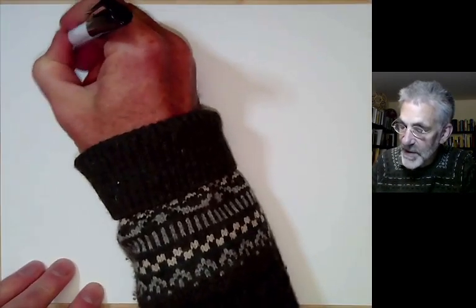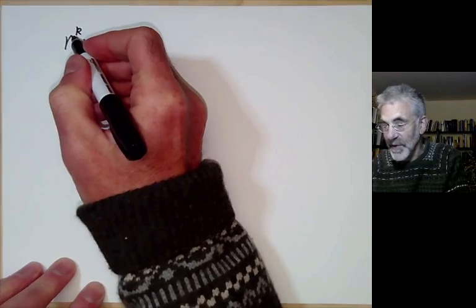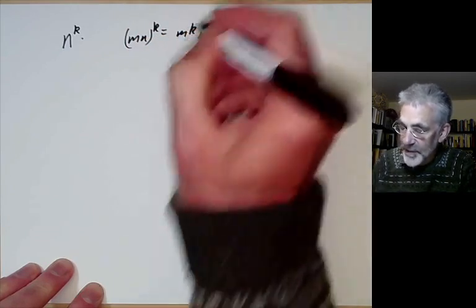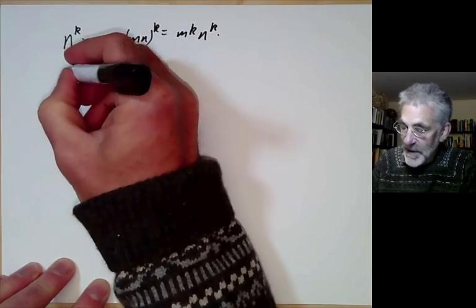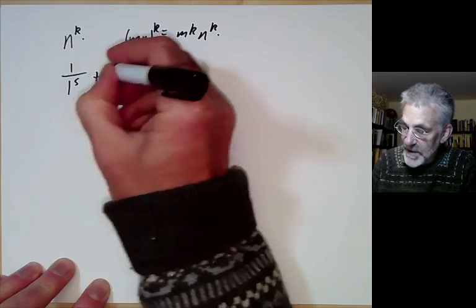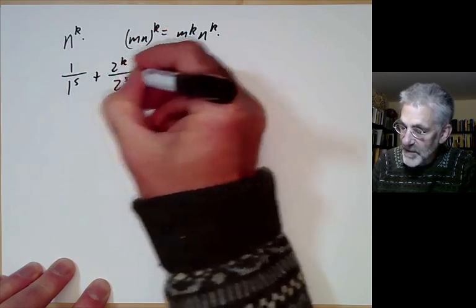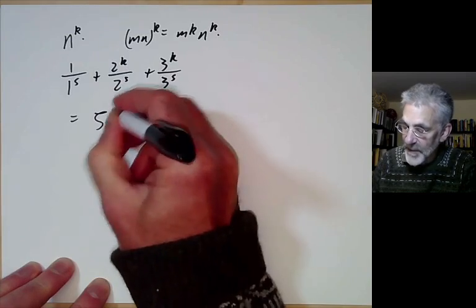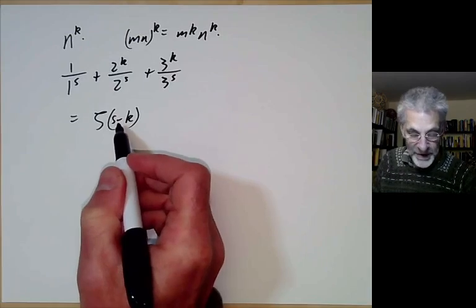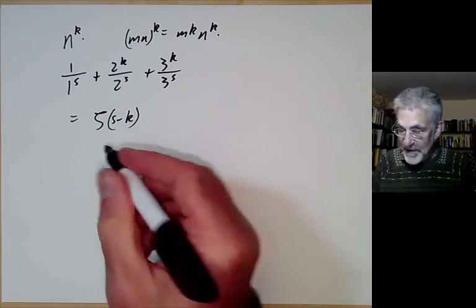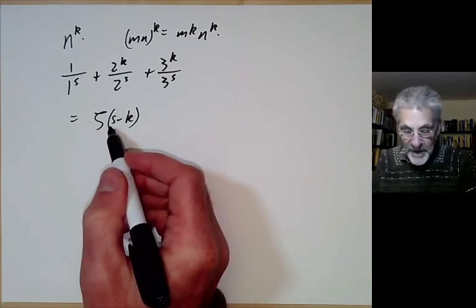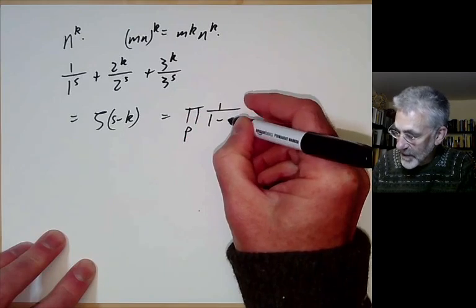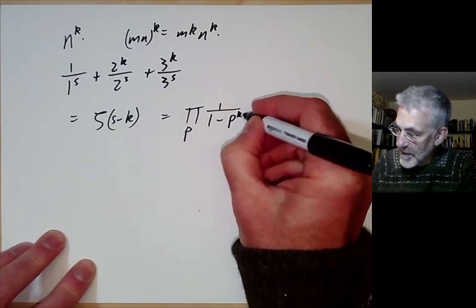The first simple example: n^k is obviously multiplicative — in fact strictly multiplicative since (mn)^k = m^k · n^k. The corresponding Dirichlet series is 1/1^s + 2^k/2^s + 3^k/3^s + …, which is just ζ(s−k) — we've shifted zeta by a constant. The product formula for zeta gives us the product formula for ζ(s−k) as the product over p of 1/(1−p^(k−s)).